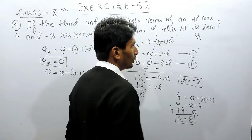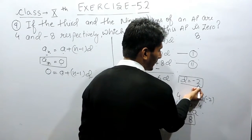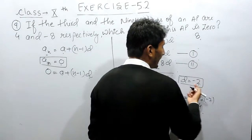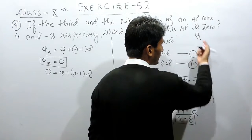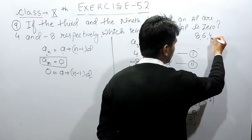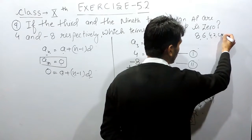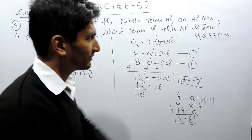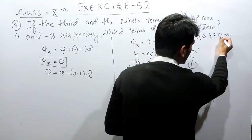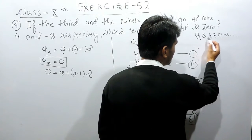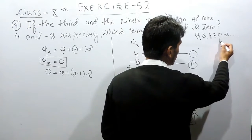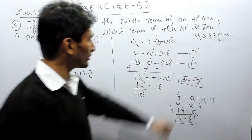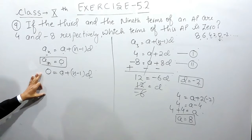The first term of the AP is 8 and the common difference is minus 2, which means we subtract 2 each time. So the AP will be: 8, 6, 4, 2, 0, and so on. We have to find which term is 0 — clearly the 1st, 2nd, 3rd, 4th, 5th terms show that the 5th term is 0.